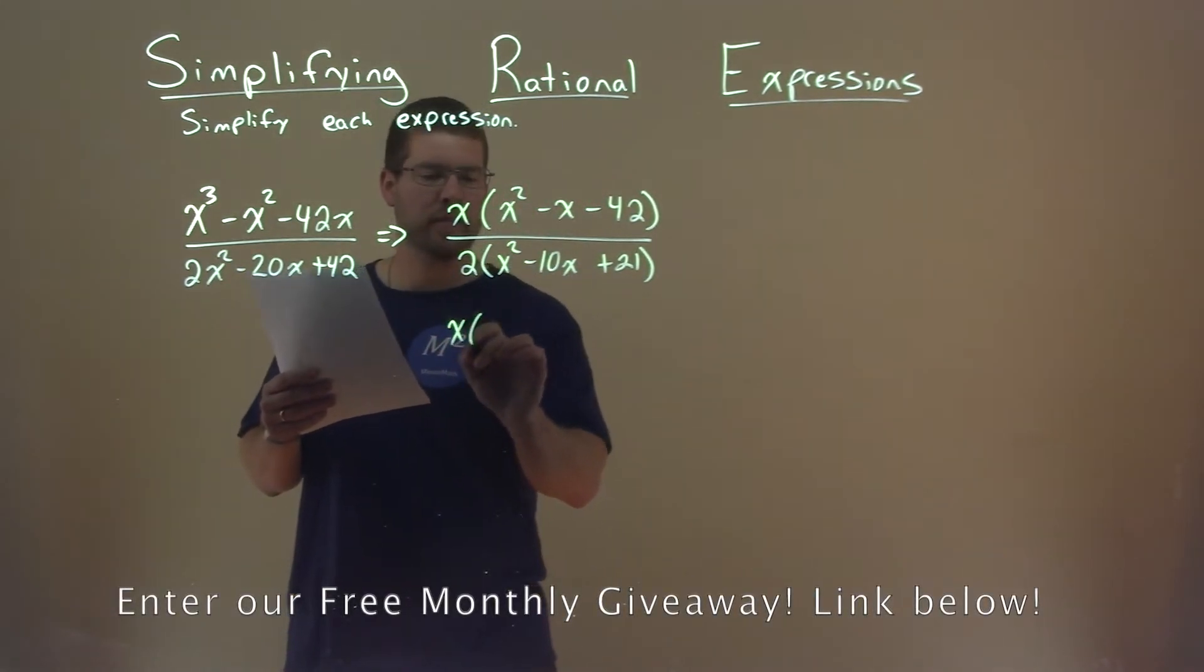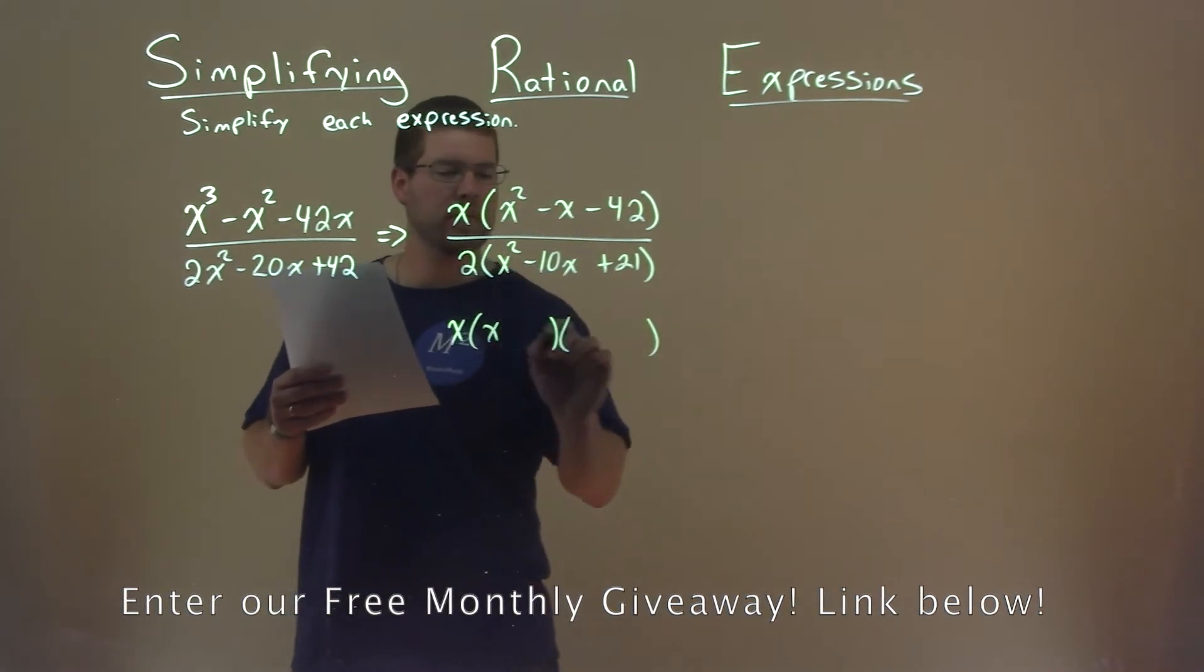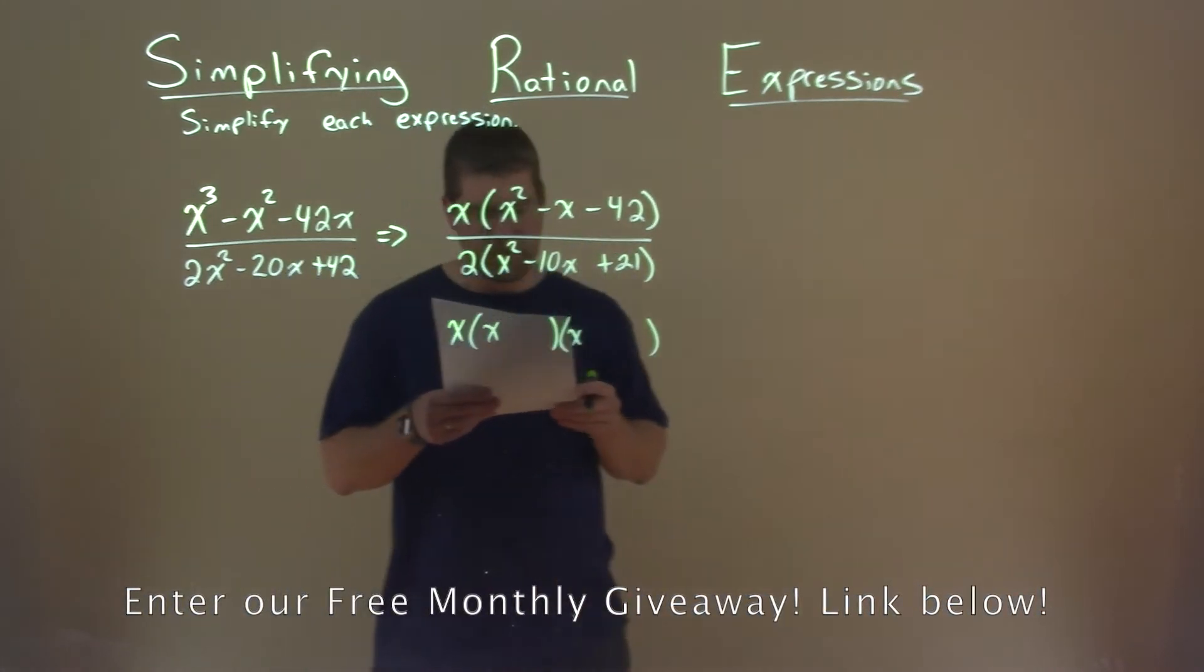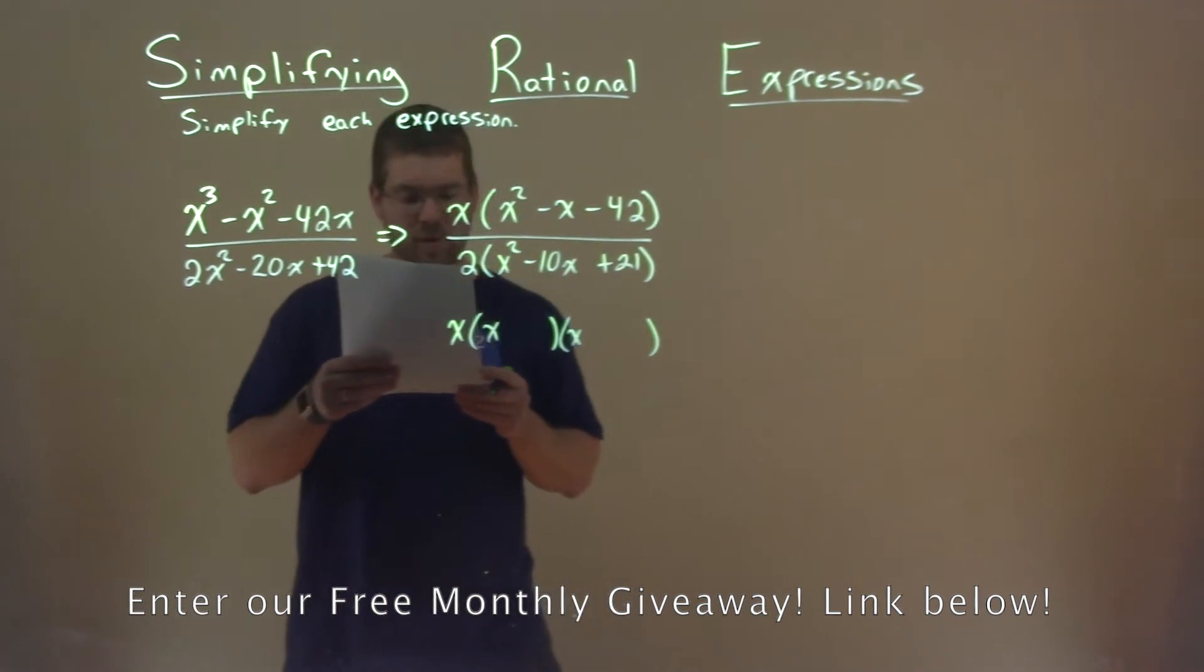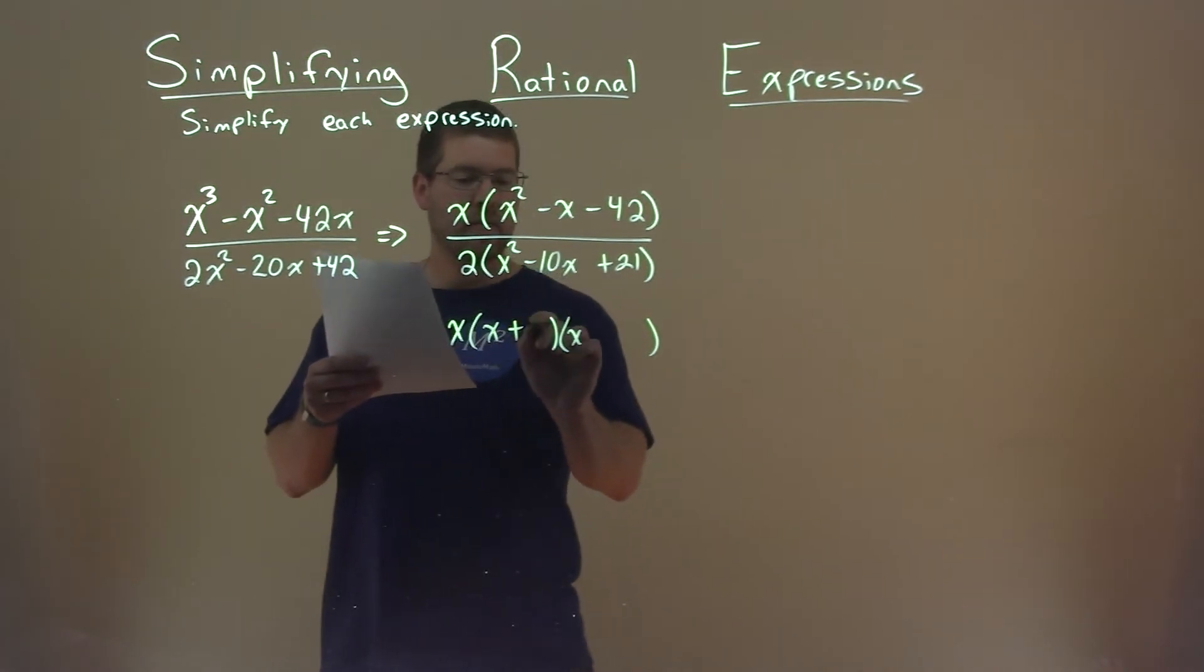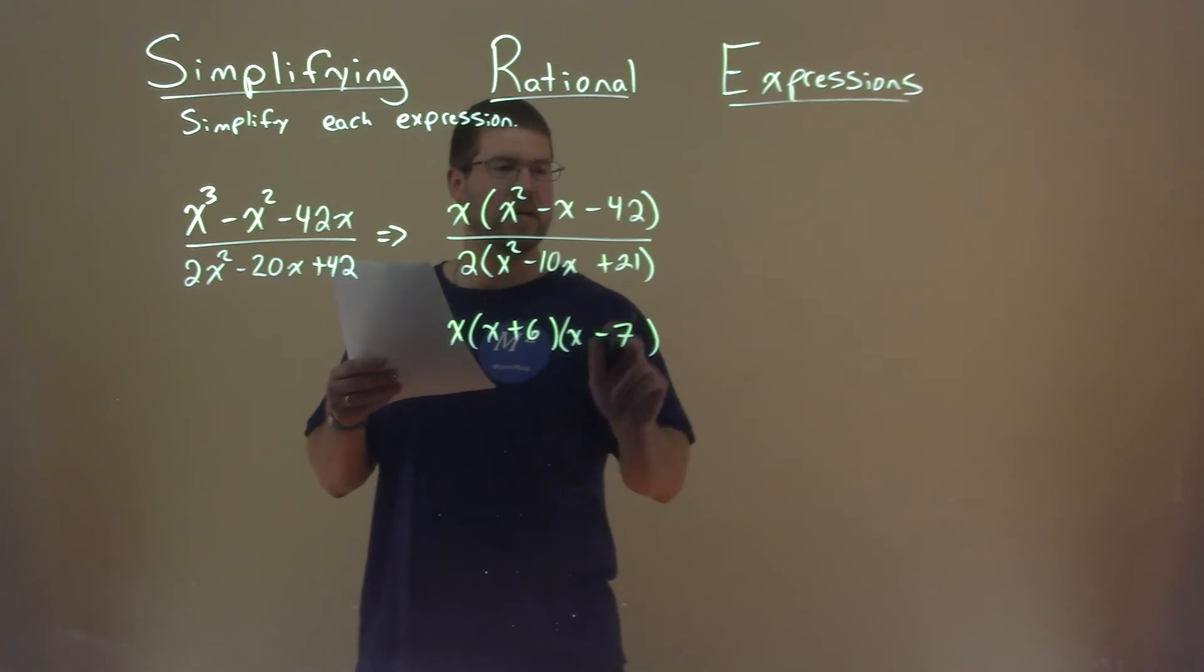So the numerator: What two numbers multiply to be negative 42 but add to be a negative 1? That's a positive 6 and a negative 7. Negative 7 times 6 is negative 42.